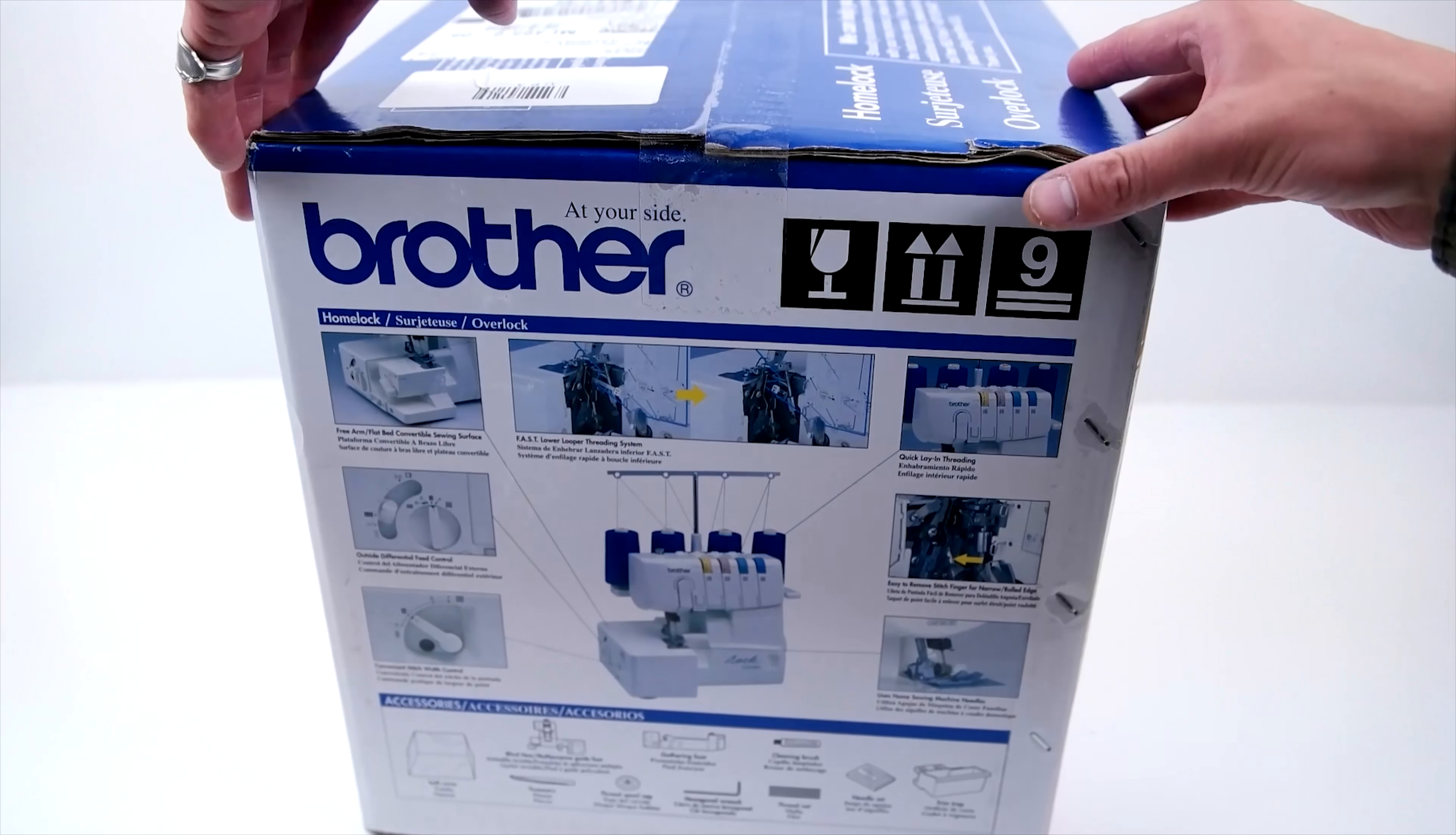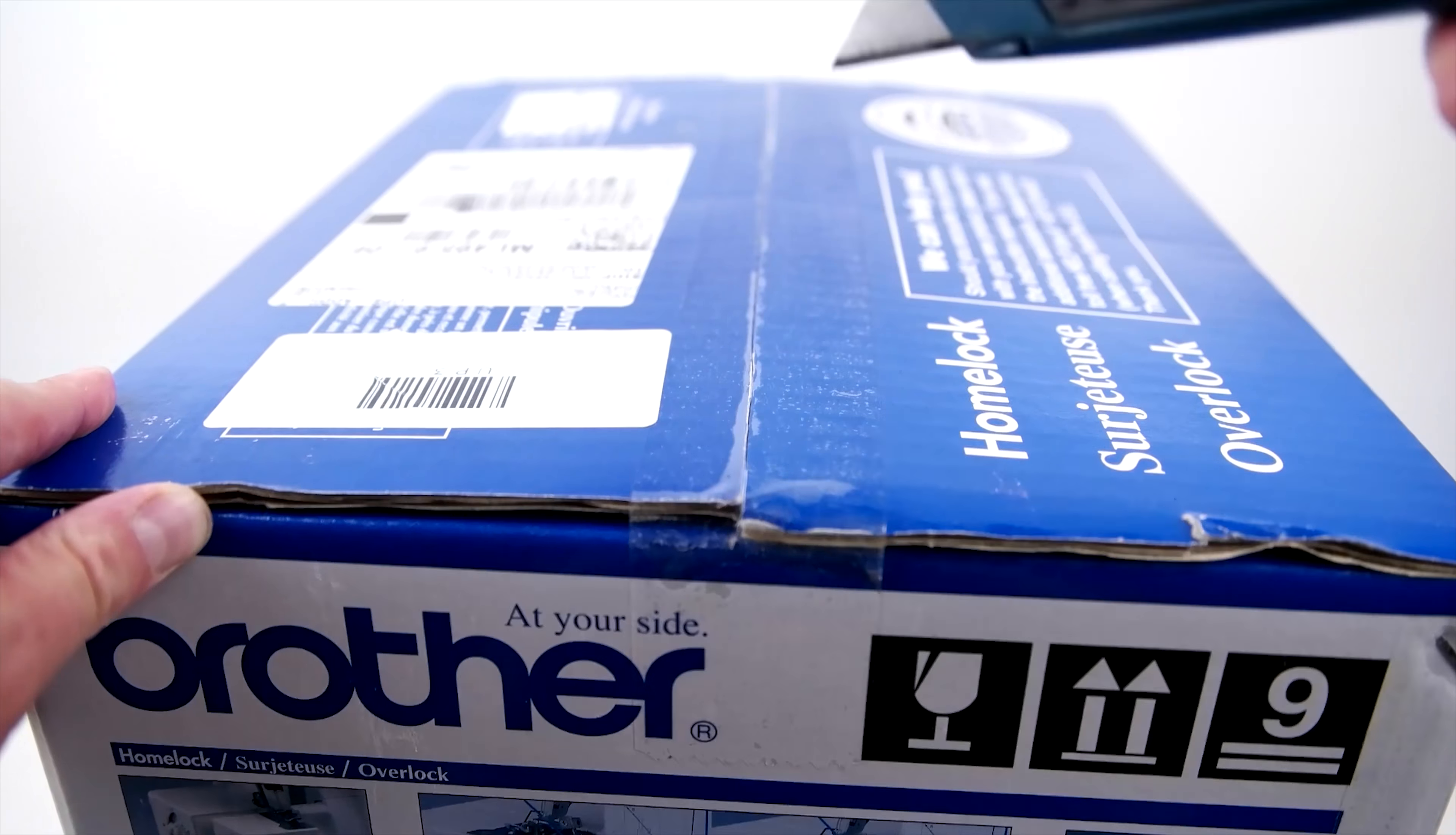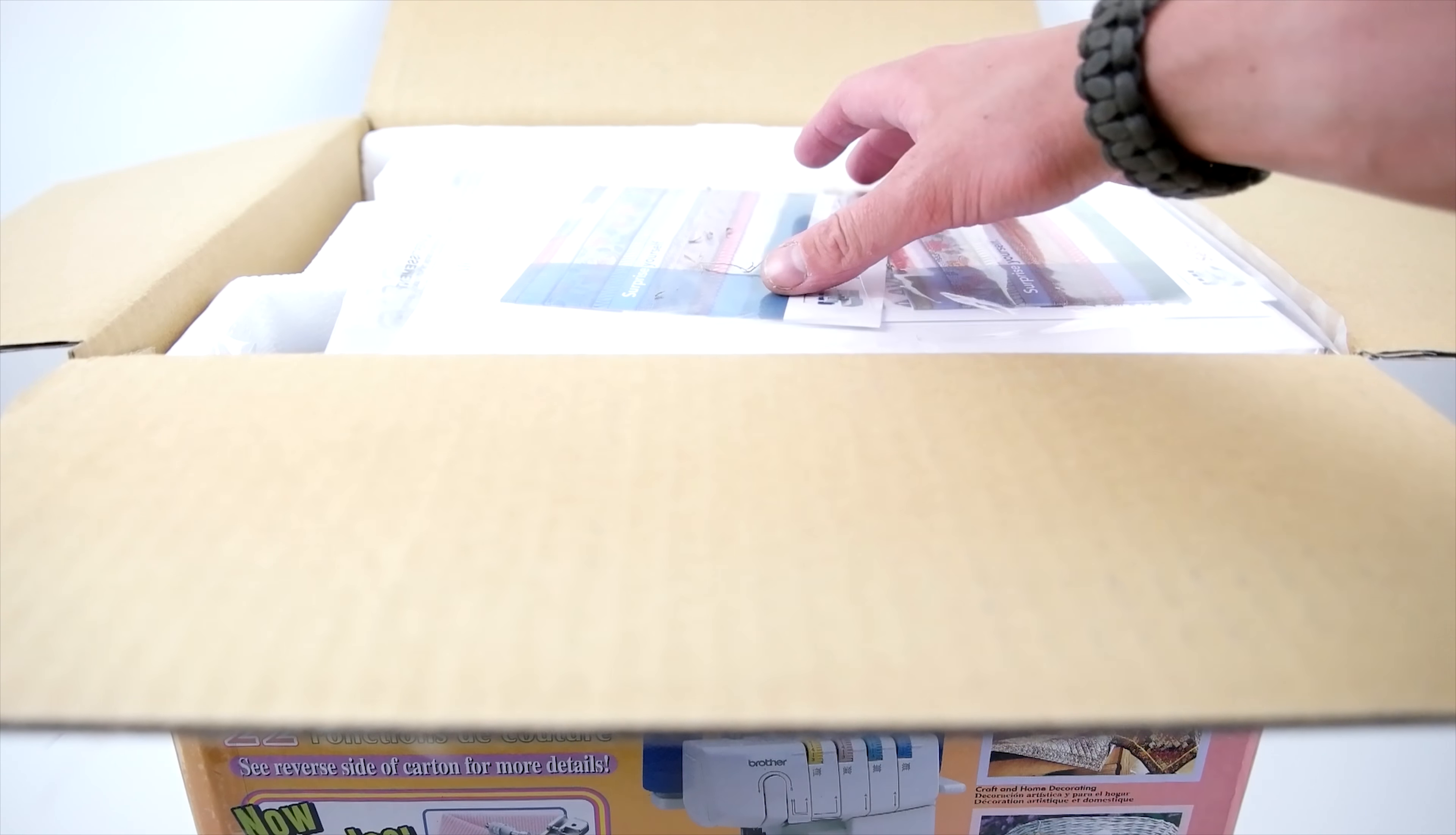Today we're unboxing the Brother 1034D serger, the top-rated and cheapest serger on Amazon right now. This serger allows for 22 different stitch functions. As always, we have a link in the description with the best place to buy this machine, saving you money and upping your sewing game.